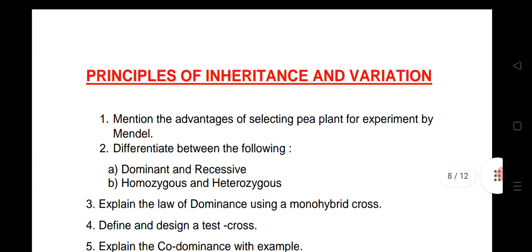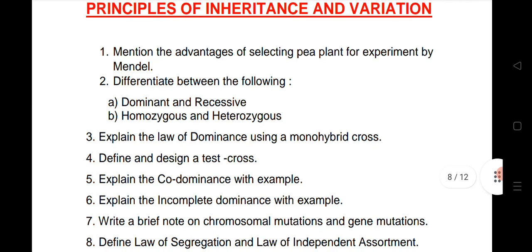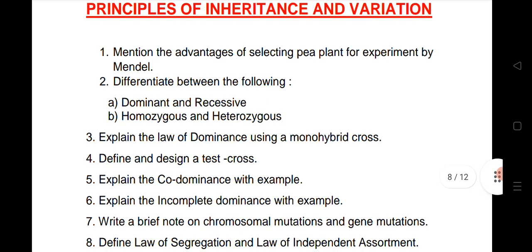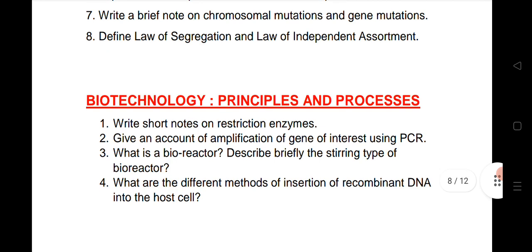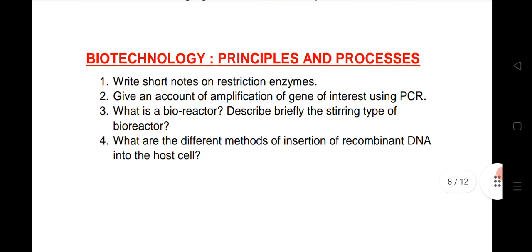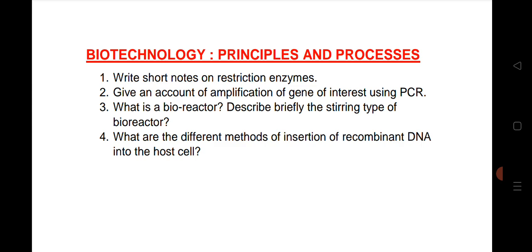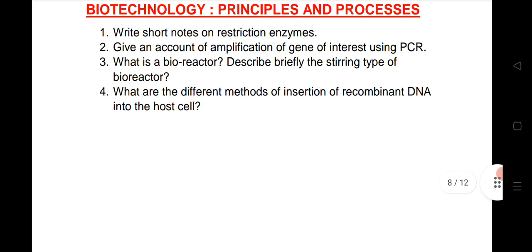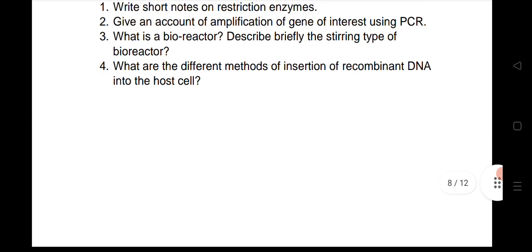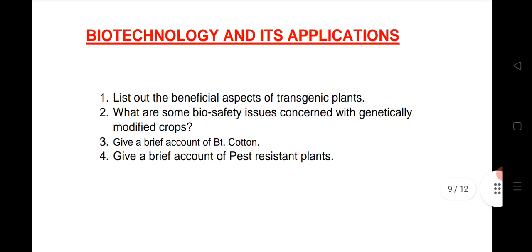Next is Principles of Inheritance and Variations. I have given 8 questions, very important. If you practice they definitely give you good marks from this chapter. You can take the screenshot for your reference. Biotechnology Principles and Process, 4 questions, very important: restriction enzymes, amplification of gene of interest using PCR, bioreactor, different methods of insertion of recombinant DNA into the host cell. Biotechnology and Its Application, 4 questions again.